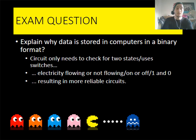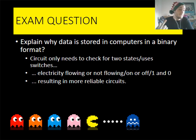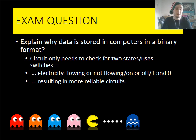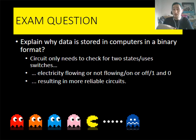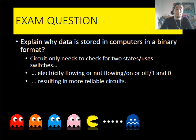Circuits need to check for two states — that's one way you can get a mark for an exam question like that, because electricity is either flowing or it's not within the computer system, so that is either your one or zero. To extend that even more, you can talk about how this results in more reliable circuits, because if you've got four or five outcomes that's four or five outcomes that could go wrong, whereas in binary you've only got a one or a zero which can go wrong.